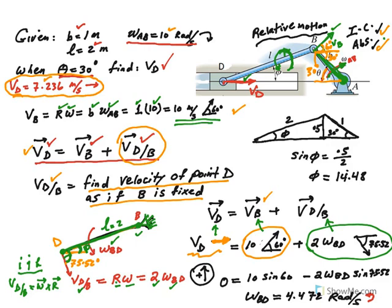We need the angle phi at this instant to figure out the exact direction. If the crank length is 1 and theta is 30 degrees, the vertical component is 1·sin(30°) = 0.5. In the triangle formed by the connecting rod of length 2, sine of angle phi equals 0.5 over 2, giving phi approximately 14.5 degrees — so the complementary angle is about 75.52 degrees.